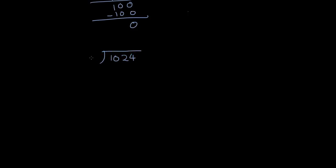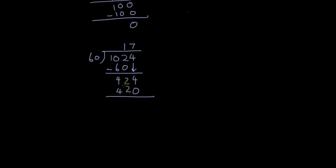Let's try 1024 divided by 60. Does 60 go into 10? No. Does 60 go into 102? Yes — 60 times 1 is 60. 102 minus 60: 2 minus 0 is 2, 10 minus 6 is 4, so 42 is left. Bring down the 4, giving 424. 60 times 7: 0 times 7 is 0, 6 times 7 is 42. Subtracting: 4 minus 0 is 4. So you can stop here and say 1024 divided by 60 equals 17 remainder 4.